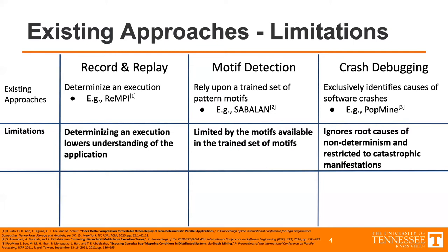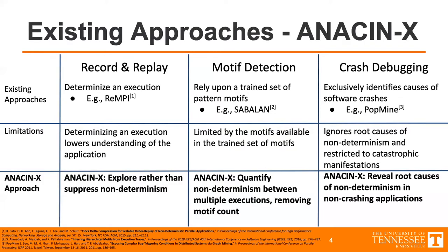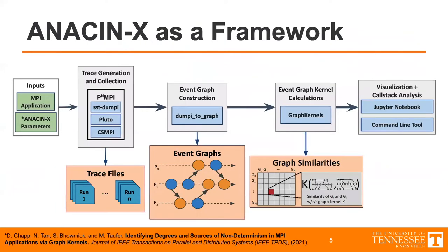So we aim to supplement these approaches with AnsonX, which explores rather than suppressing non-determinism by running the application normally. We quantify non-determinism between multiple executions, removing the need for prior knowledge. And then we reveal root causes of non-determinism even in non-crashing applications, meaning applications like ENZO will have a tool they can use to handle this problem. I'll now pass it off to my colleague, Nick Bell.